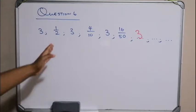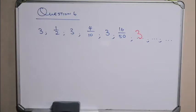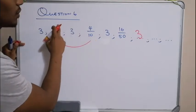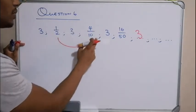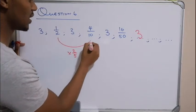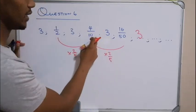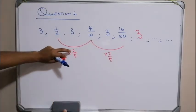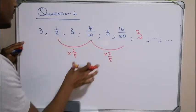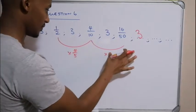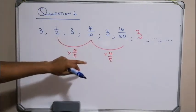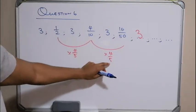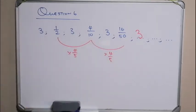And my even terms — they are all fractions; they form part of the geometric pattern. So how do we go from a half to 4 over 10? Well, you'd have to multiply the 1 by 4 and multiply the 2 by 5. Let's see if this is consistent: 4 over 10 multiplied by 4 over 5 — 1 times 4 is 4, 2 times 5 is 10, 4 times 4 is 16, 5 times 10 is 50. Okay, so it does check out.